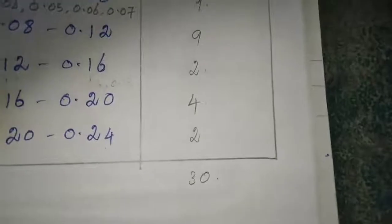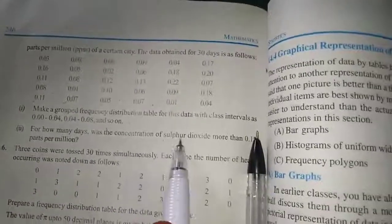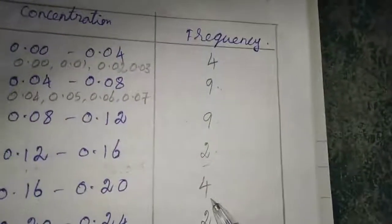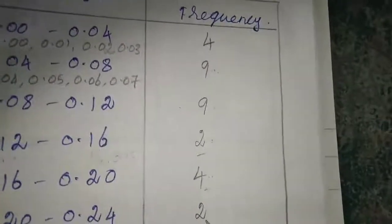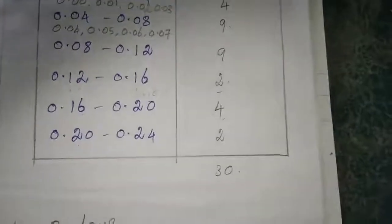They are asking, for how many days was the concentration of sulfur dioxide more than 0.11? See here, 0.11 means from here it will come, so 2 plus 4 is 6, 6 plus 2 is 8. So the answer for the second question is 8 days. That's why the 5th sum is completed.